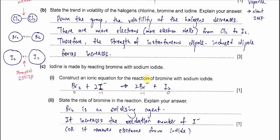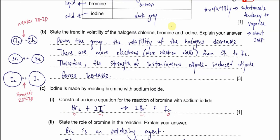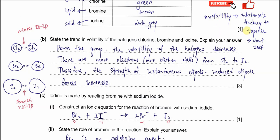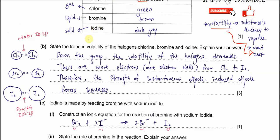Part B: State the trend in the volatility of the halogens — chlorine, bromine, and iodine — and explain your answer. First, you need to know what volatility means. Volatility refers to whether a liquid or solid can vaporize or turn to gas easily. High volatility means the substance more easily forms gas. Down the group, the volatility of halogens decreases.